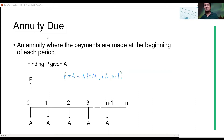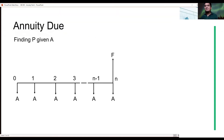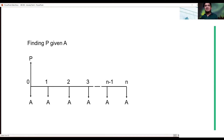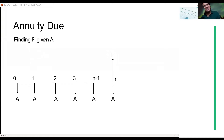How about F given A? There was a slide error — it was showing P given A again instead of F given A. Okay, so this is F given A. Notice there's no payment at the end here, because payments are made at the beginning of the period.